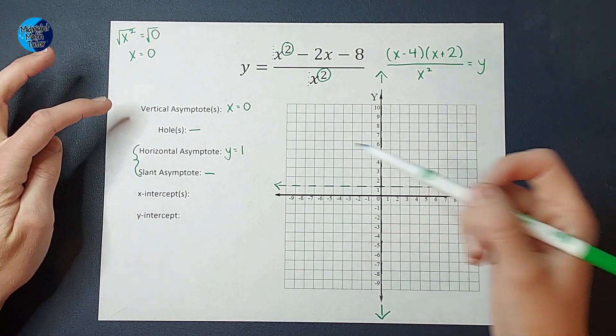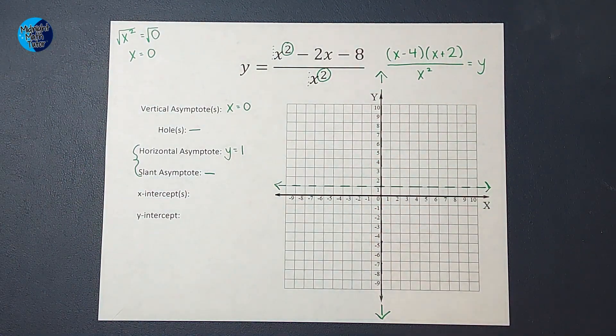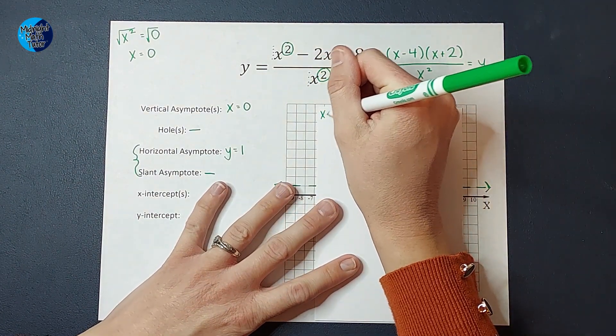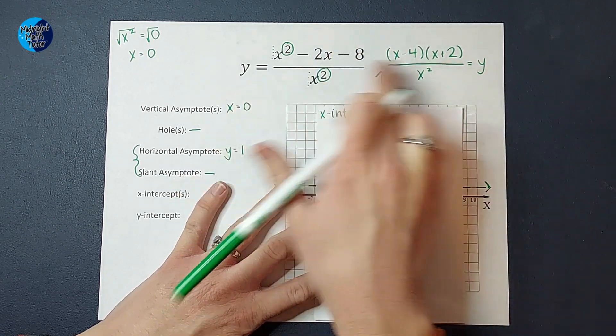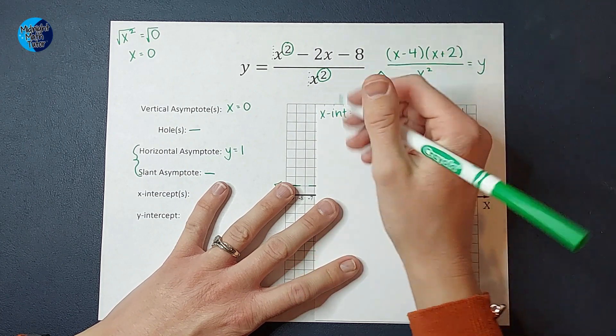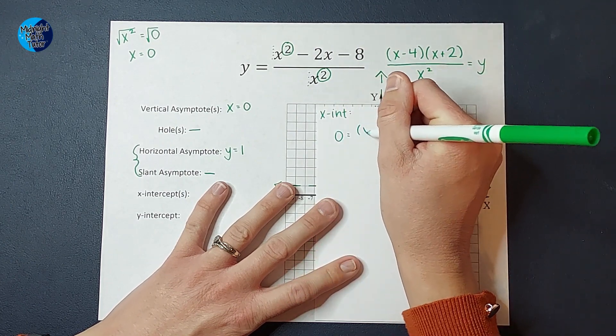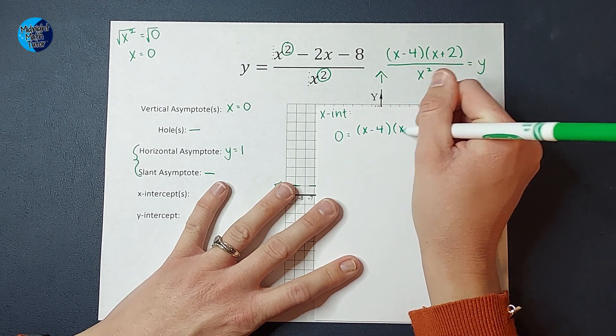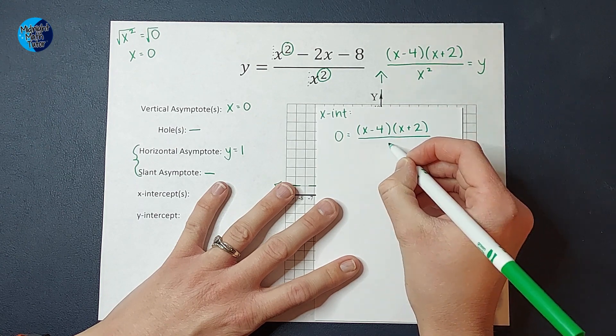All right. Now that we know that, look how far we are. Now we are going to look for our x-intercepts. So to find our x-intercepts, we set y equal to zero. And I could do either of these. So I'm going to do this one. So I'm going to have zero equals x minus four times x plus two over x squared.